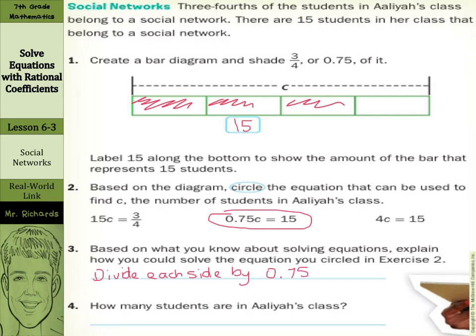And then it says how many students are in Aaliyah's class. If I divide both sides by seventy-five-hundredths, this would cancel out. And using our calculators, 15 divided by seventy-five-hundredths is 20. So C is going to equal 20 — 20 students in that class.